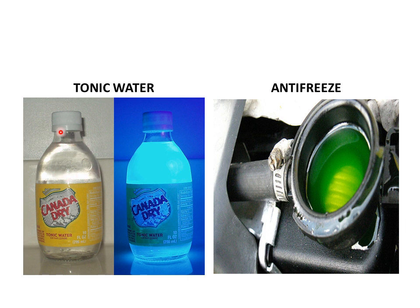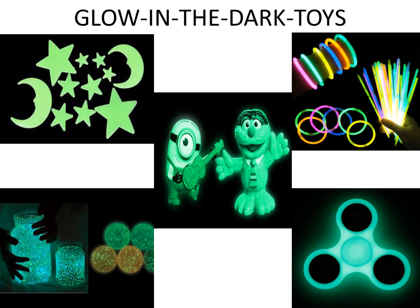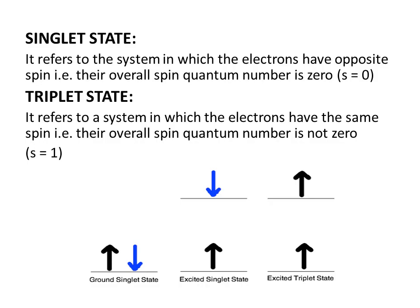Did you ever observe that tonic water, when irradiated by UV light, appears blue in color? Or did you notice that the coolant or antifreeze in our automobiles appears green in sunlight? Or have you noticed that some objects or toys glow in the dark even when there is no light? So why does all this happen?